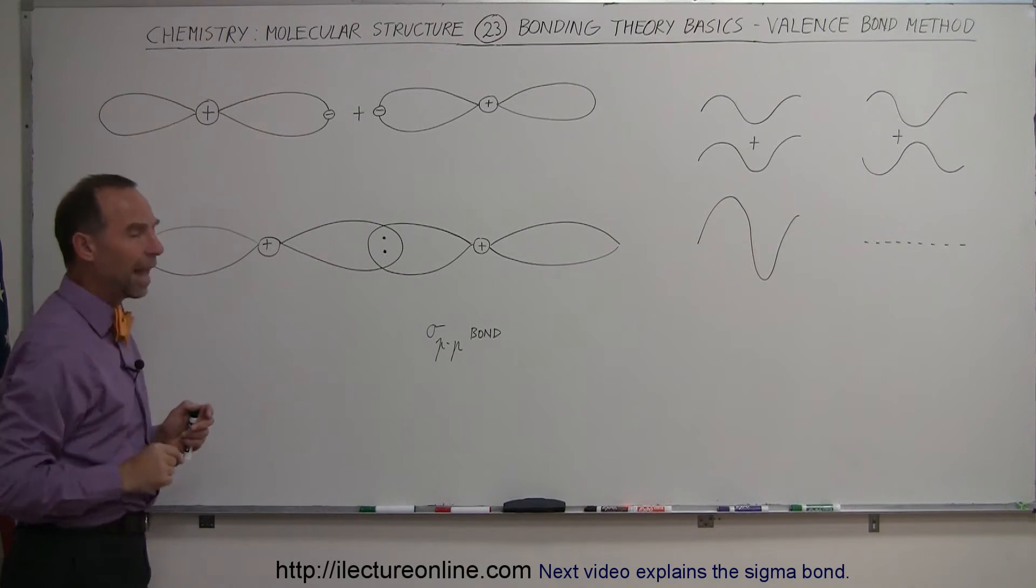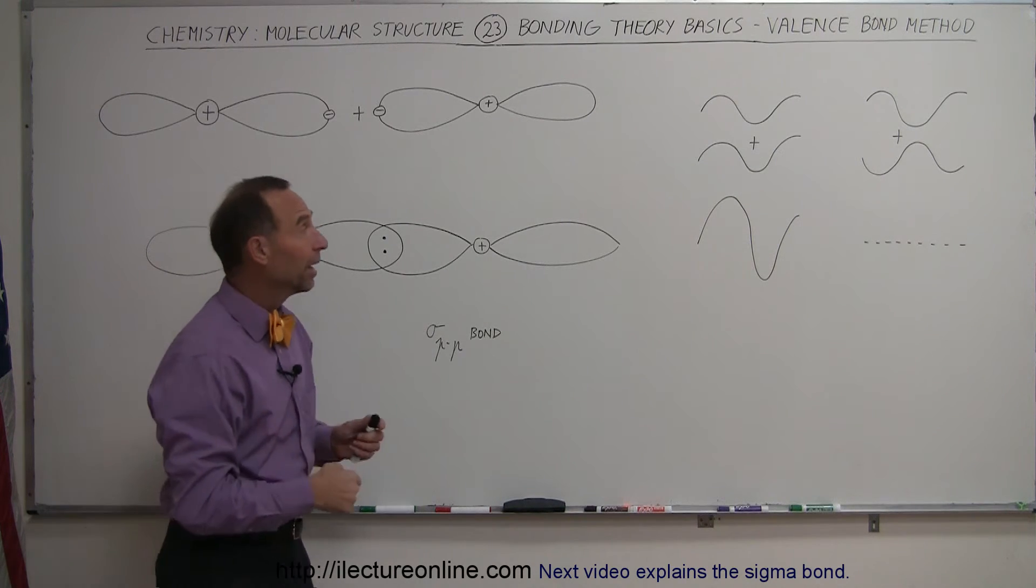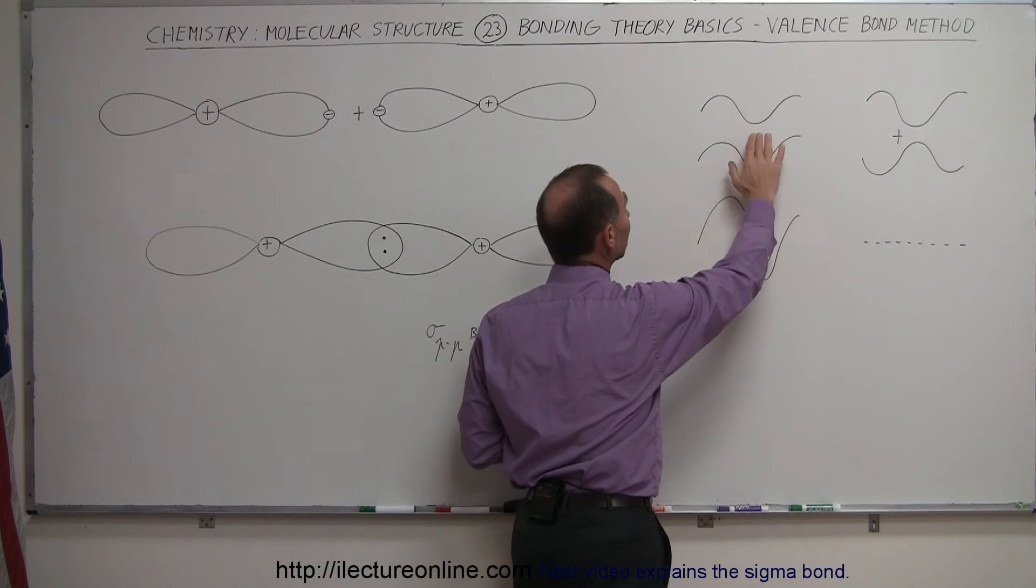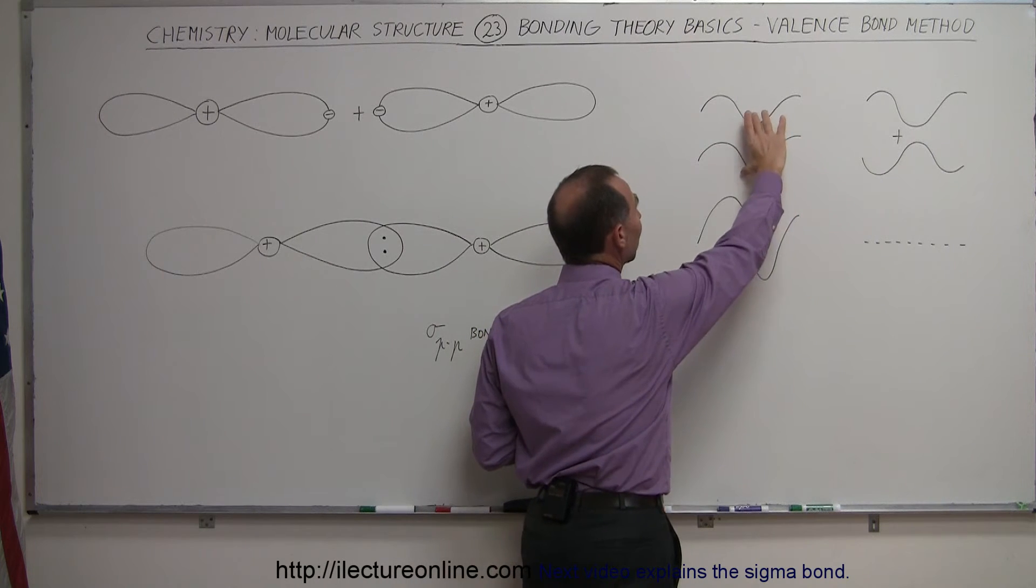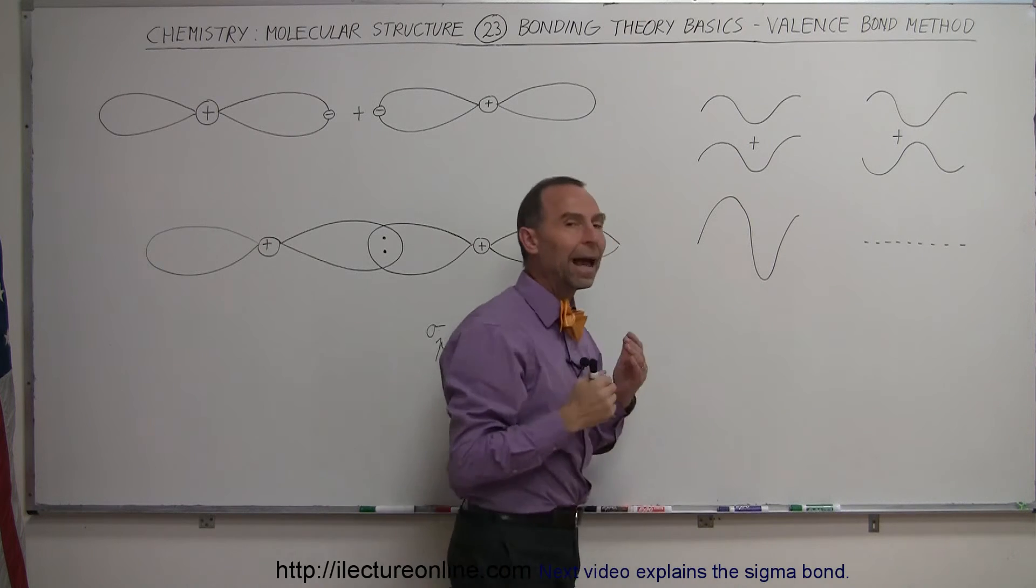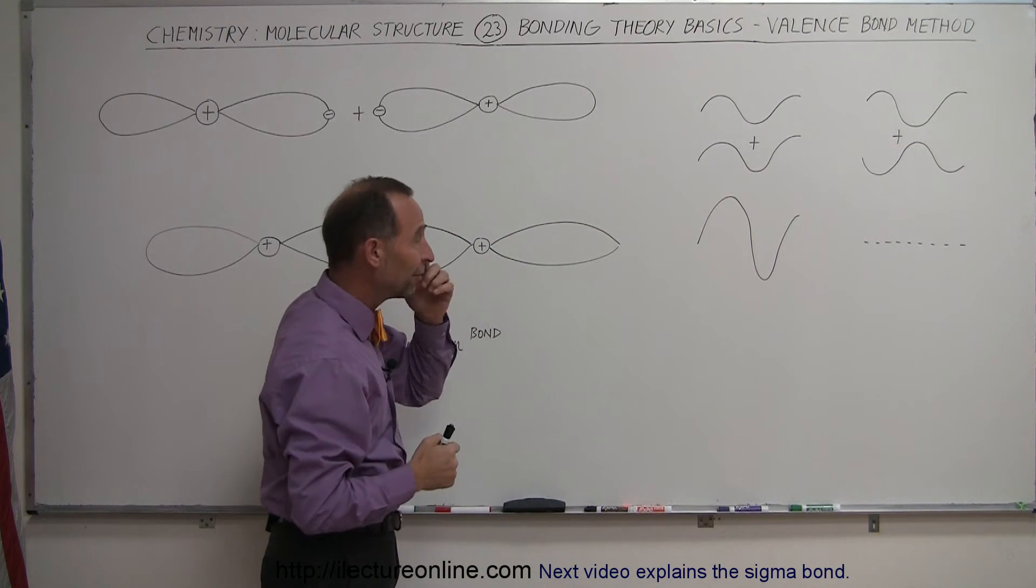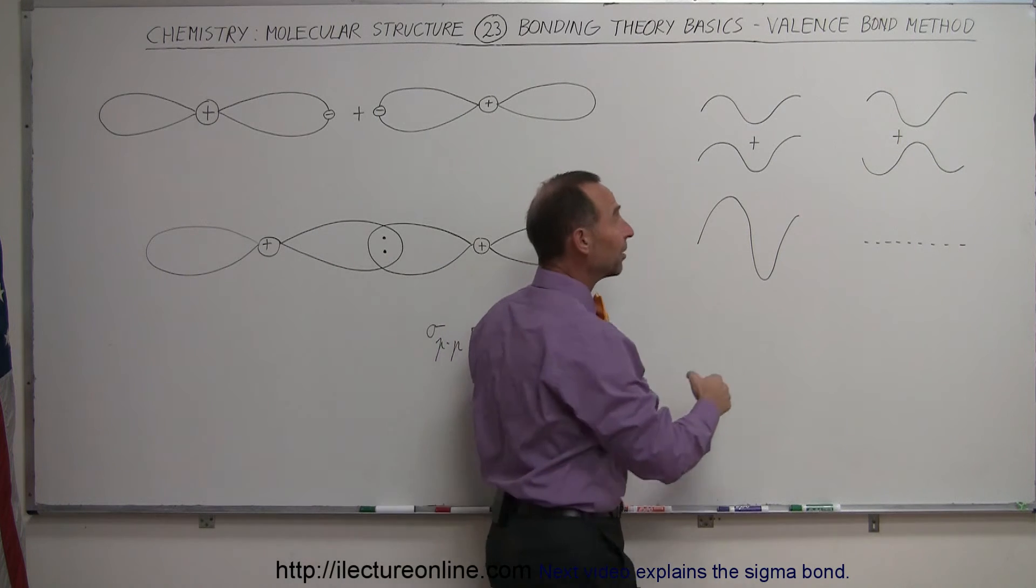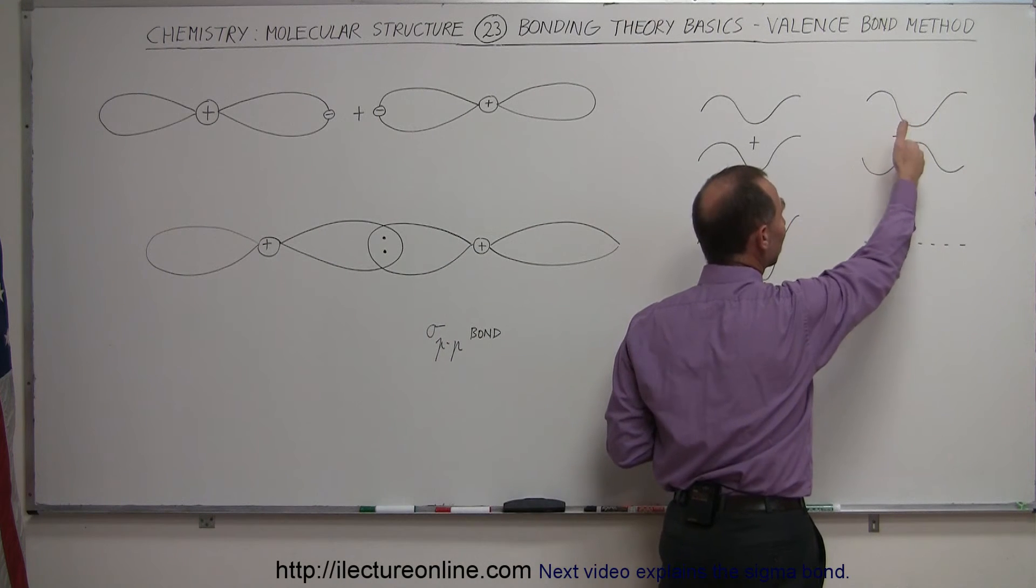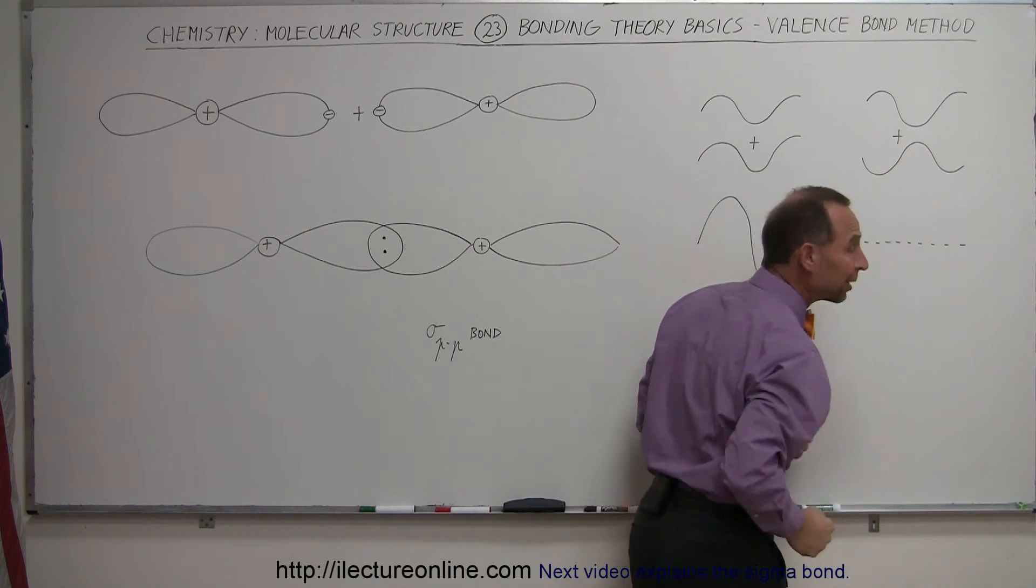The reason why this can happen, and again remember that electrons behave like waves, is that whenever waves come together and they are in phase, they will be additive and they will form a higher amplitude existence of the wave. But if two waves come together and they're not in phase, they're exactly 180 degrees out of phase, they will destroy each other and end up with nothing.